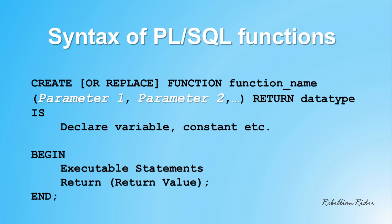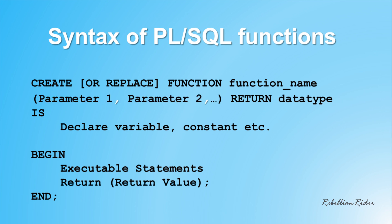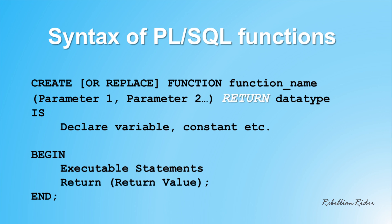Followed by the function name, we have the parameters. A function can either have 0 parameters or n number of parameters. You just have to make sure to separate all the parameters from each other using a comma and enclose them inside parentheses. Followed by the parameter list, we have to specify the value which the function will return using the RETURN keyword. With PL/SQL functions it is mandatory to specify the return value. In the header of the function, you only have to write the data type of the value which you want your function to return.